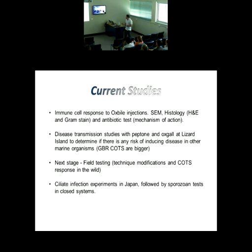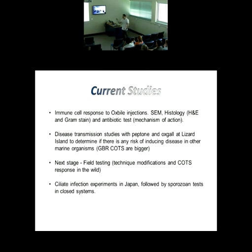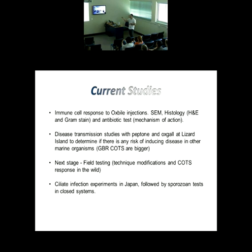After that, we are going to do transmission studies on Lizard Island. The problem is the starfish in the Philippines are very small — 22, 25 centimeters — but here in the GBR you can see 35 to 40 centimeter Crown of Thorns. We know these things work in a concentration-dependent manner, as shown by the peptone studies. The next stage, if everything goes well, is field testing, where we will test different technique modifications — the spinal needle, biopsy needle — to create small holes and avoid release of chemicals into the ocean.